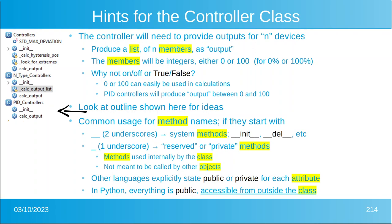PID controllers produce an output somewhere between 0 and 100 percent. This is another reason to use numbers — we want the same class to handle both n-type controllers and PID controllers. Look at the outline shown here for ideas on what your methods might look like, focusing on the n-type controller since that's the only one that's complete in this example.